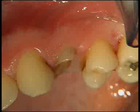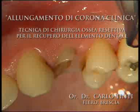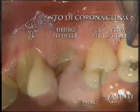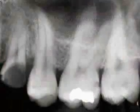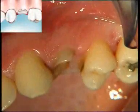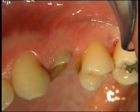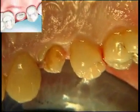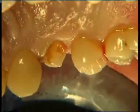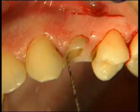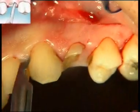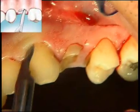Clinical crown lengthening. A young patient with healthy periodontium, both from a clinical and radiographic point of view, shows a predominantly horizontal dental fracture causing the loss of the clinical crown of the first left mandibular premolar. The aim of the operation is to highlight the gingival margins for a future restoration and to revive a new biological amplitude that is in harmony with a definitive prosthesis restoration.